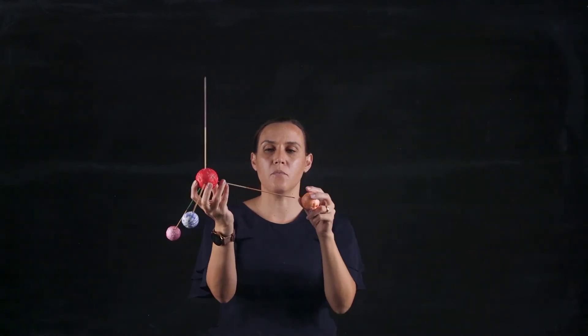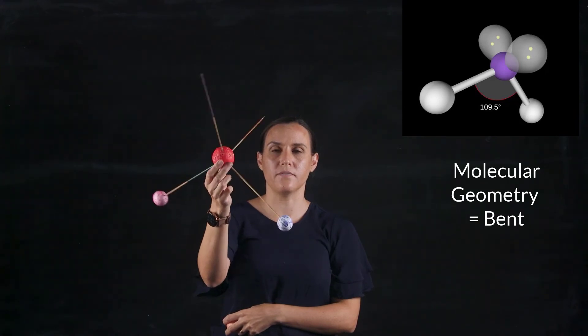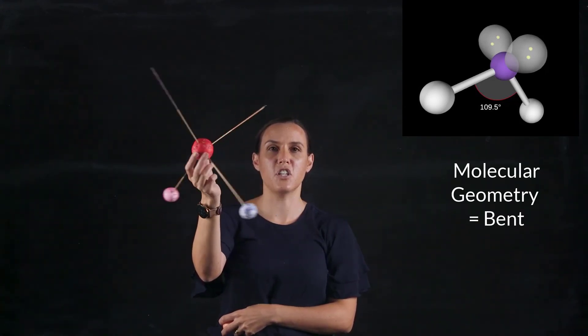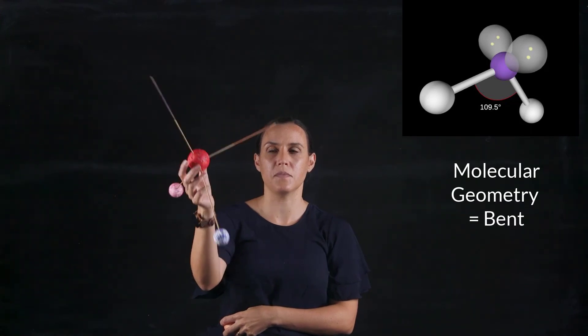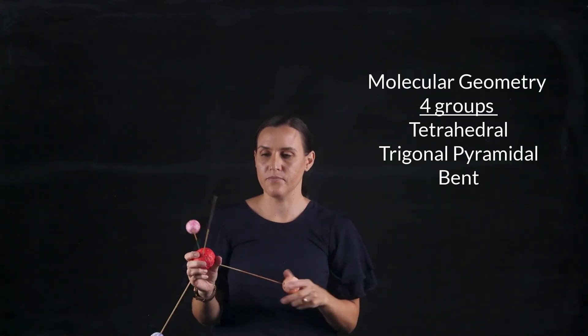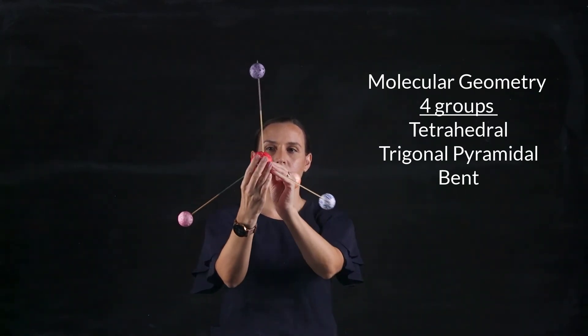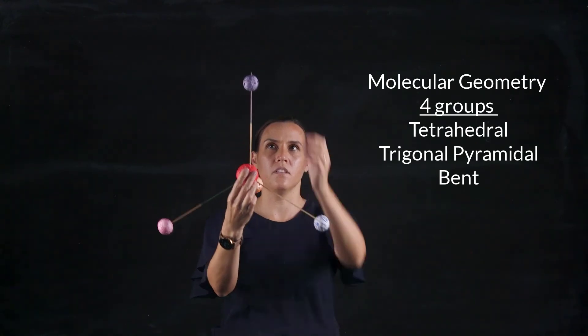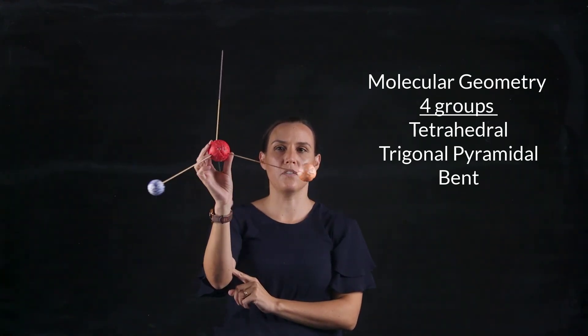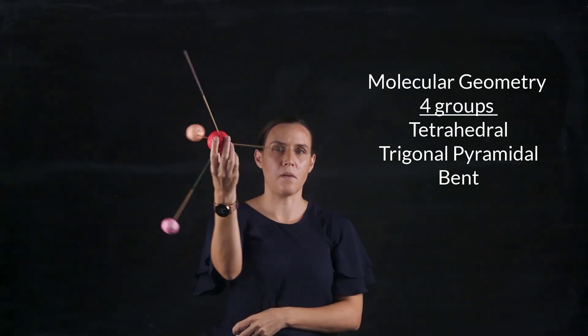And if I take another atom off and put another lone pair in, I'm back to that bent conformation. So looking at the shape of the resulting atoms. So that's four. I've got tetrahedral, my tetrahedral shape, trigonal pyramidal, and now we've got that bent.